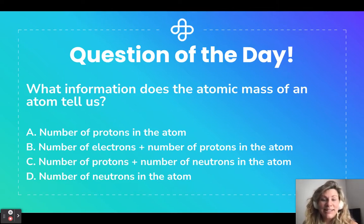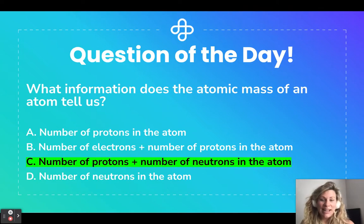Okay, now let's look at our answer choices. So again, what information does the atomic mass of an atom tell us? Does it tell us the number of protons in the atom? Does it tell us the number of electrons and the number of protons in an atom? Does it tell us the number of protons and the number of neutrons in an atom? Or does it tell us the number of neutrons in an atom? Pause here if you need more time to think about it. Ready to check to see if you're correct? Let's go. If you said C, the number of protons and the number of neutrons in the atom, you are correct.